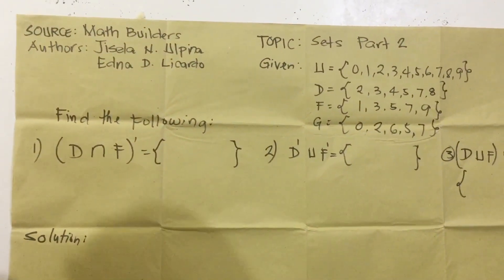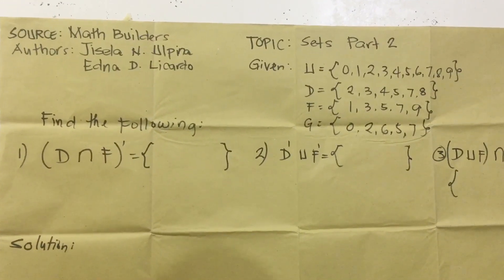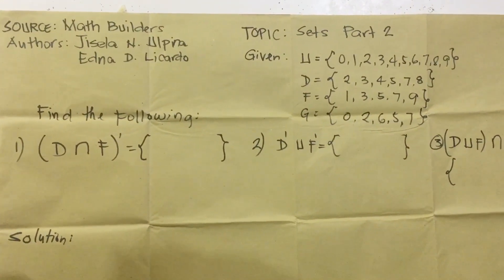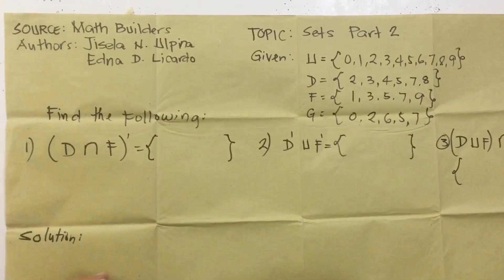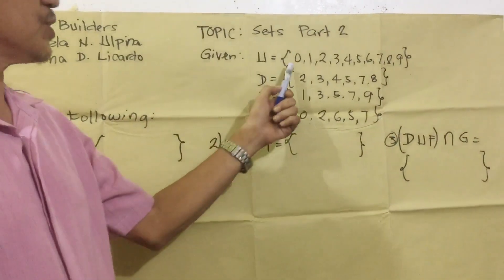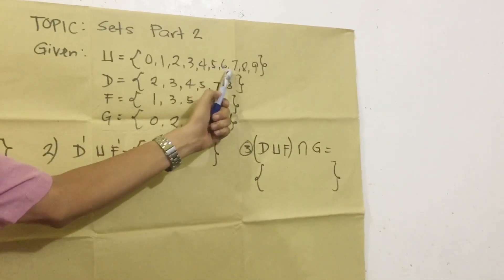Source: Math Builders, Authors Gisela N. Olpina and Aikna D. Ricardo. This time we have the given universal set: 0, 1, 2, 3, 4, 5, 6, 7, 8, 9.